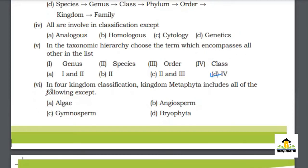MCQ number 6: In 4 Kingdom classification, Kingdom Metaphyta includes all of the following except — A. Algae, B. Angiosperm, C. Gymnosperm, D. Bryophyta. The right answer for this MCQ is A. Algae.